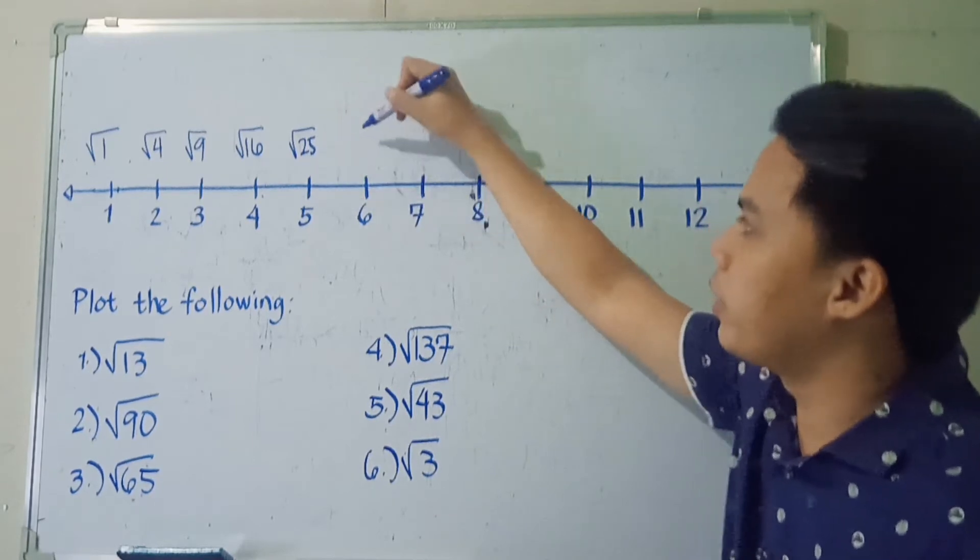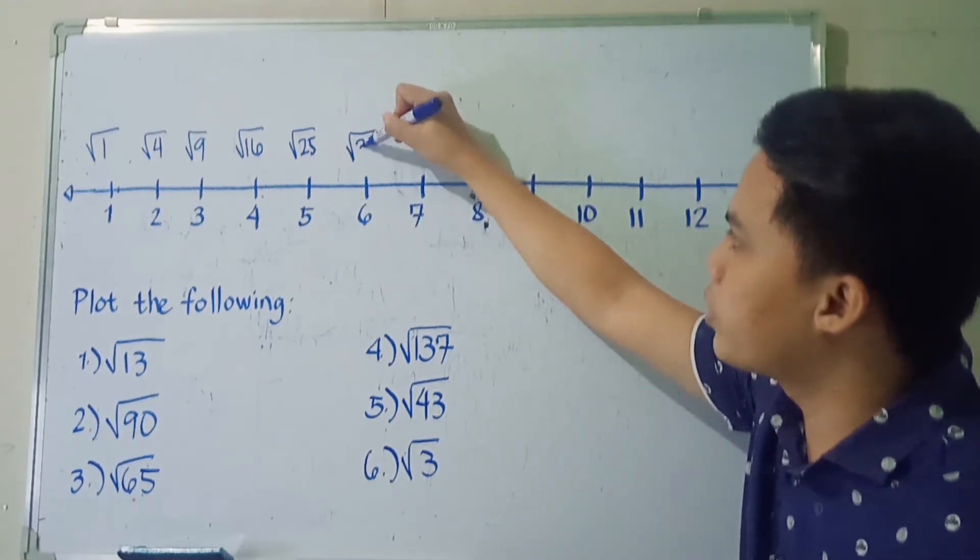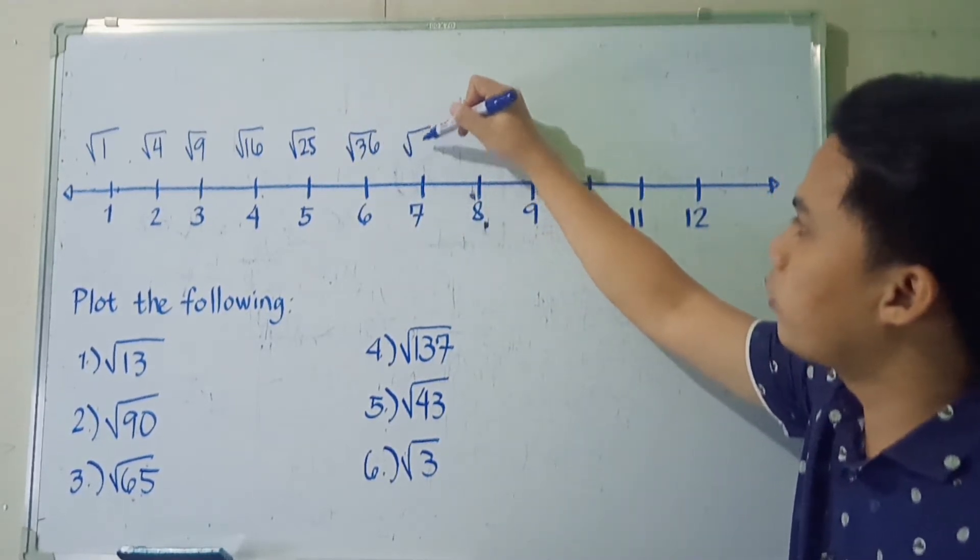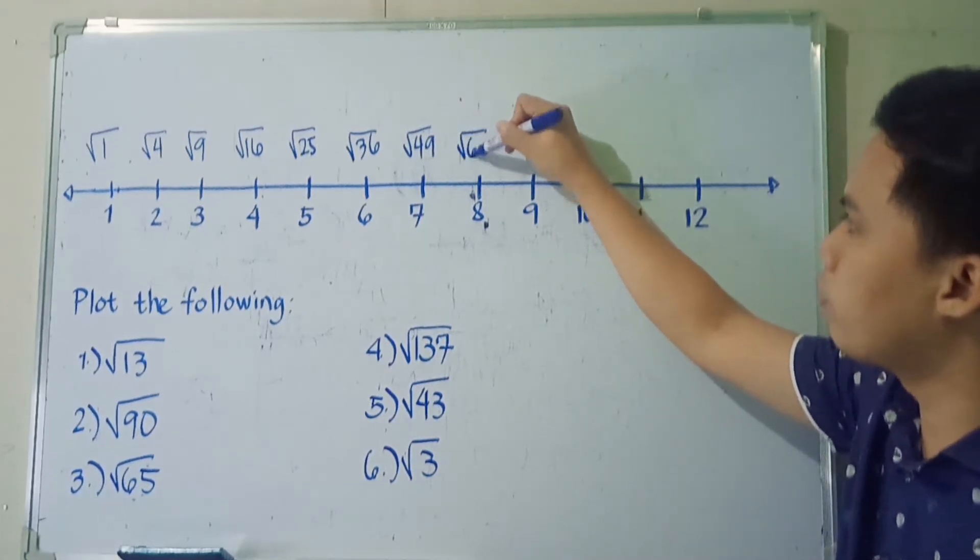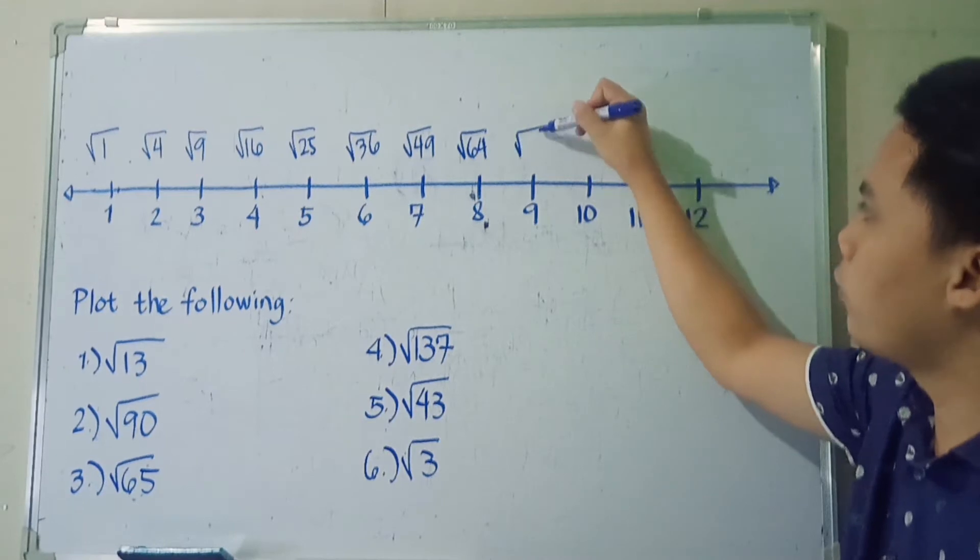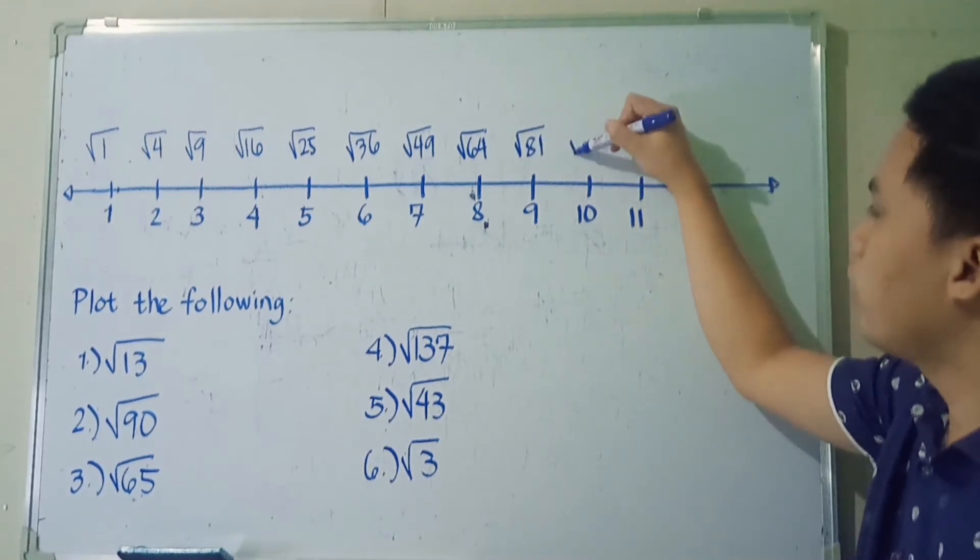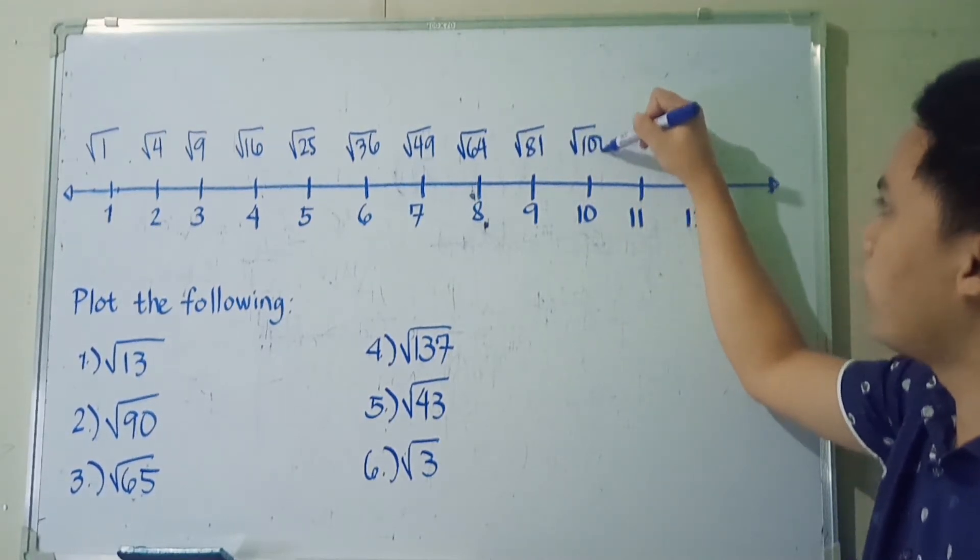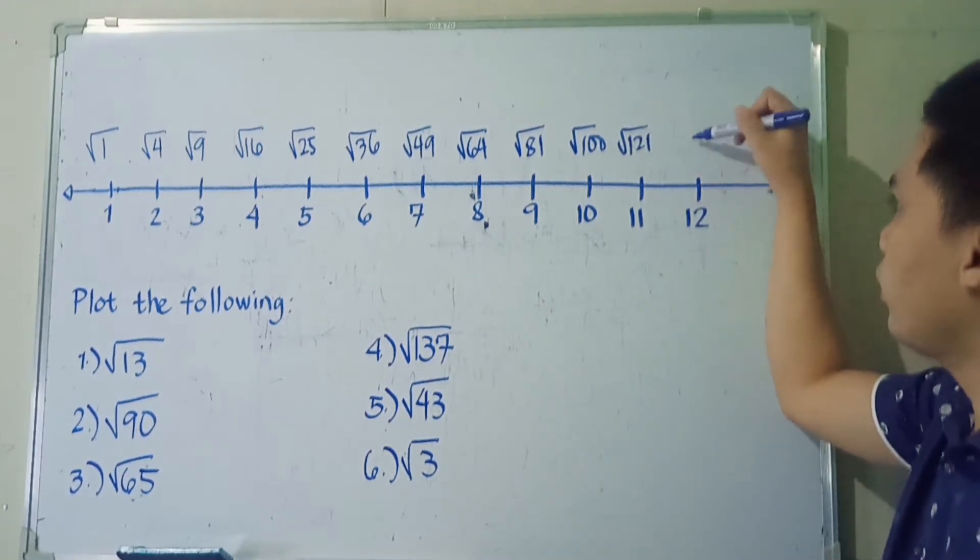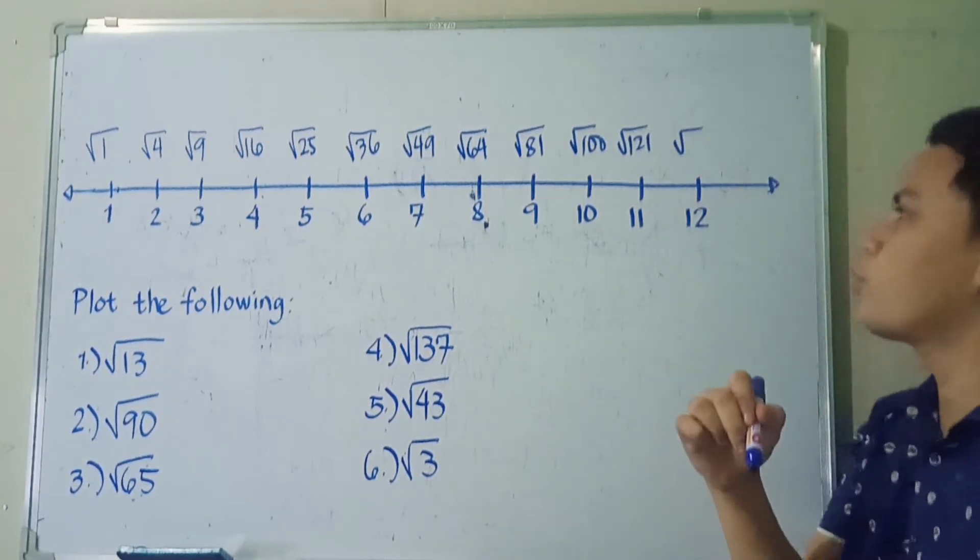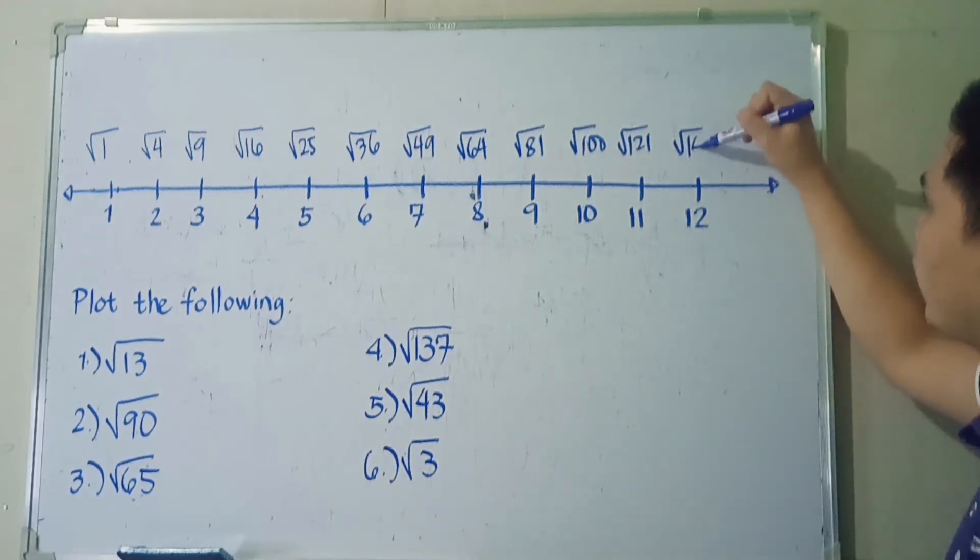Then we have square root of 36, square root of 49, square root of 64, square root of 81, square root of 100, square root of 121. And lastly, we have square root of 144.